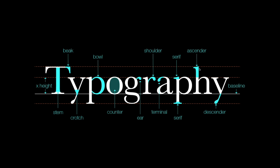Now let's talk about counters, which are fully or partially closed spaces found in letters like o, a, and b. If the letter isn't fully enclosed, then it's called an open counter. Let's also mention the stem, which is this one right here — a single vertical stroke upward to create letters like l or f, and it connects one stem to another using a crossbar detail, like in the letter h.